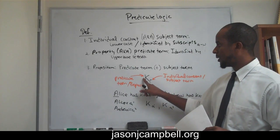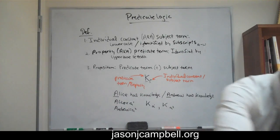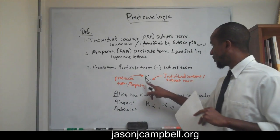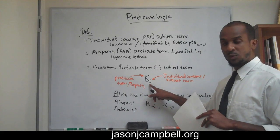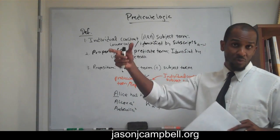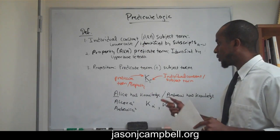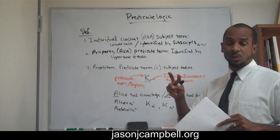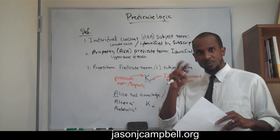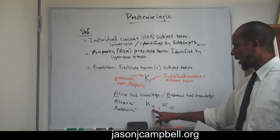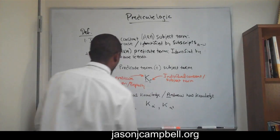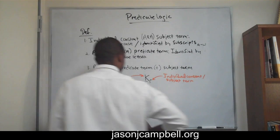So we understand what the predicate term is and what the individual constant is. We recognize how to symbolize multiple individual constants all having the same property — in this case, knowledge. We also recognize how to differentiate similar individual constants where two subjects share the same letter, such as A₁ for Alice and A₂ for Andrew.